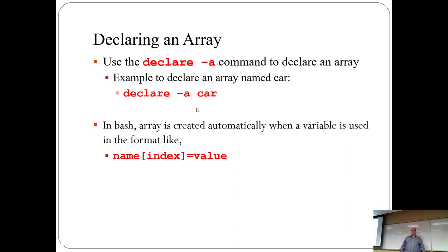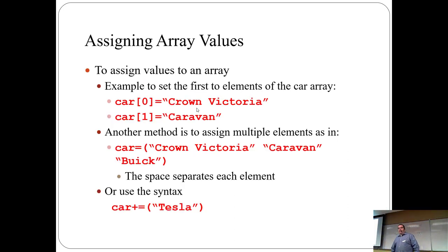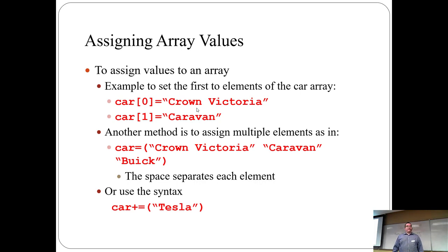To assign values: 'car[0]=Crown Vic', 'car[1]=Caravan', or you can do 'cars=(Crown_Vic Caravan Buick)' — note they're space-delimited, not comma-delimited. If your values contain spaces, put them in quote marks. You can also append: 'car+=(Tesla)' adds Tesla to your list of cars.